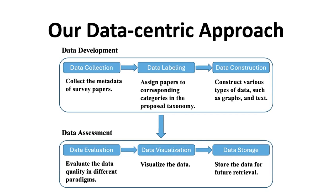In this slide, I will walk you through the process of my proposed approach. My approach can be divided into two stages. In the data development stage, first, we collect the metadata of 112 survey papers about large language models. Second, we propose a new taxonomy and label each paper to corresponding categories in the taxonomy. Third, we construct various types of data such as graphs and text. In the data assessment stage, we evaluate the data quality in different paradigms, visualize the data, and store data for future retrieval.